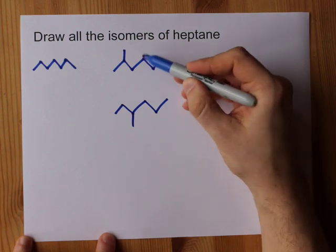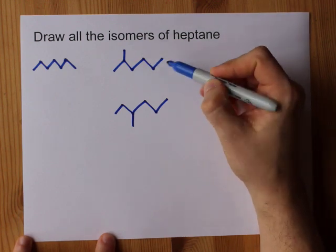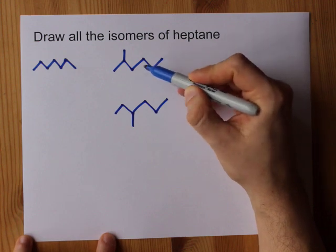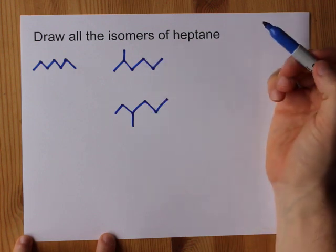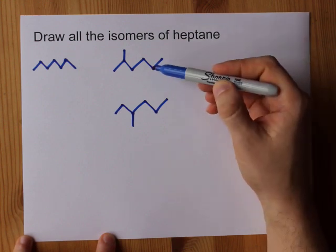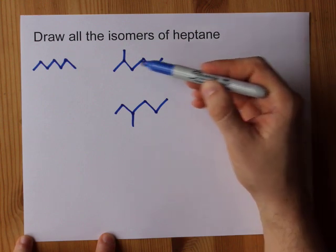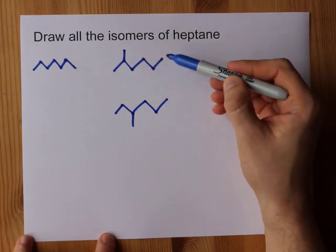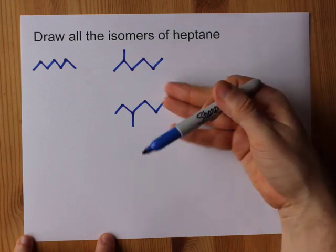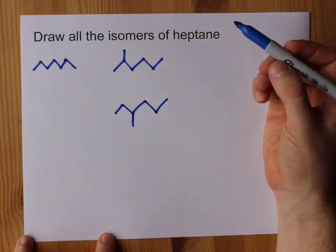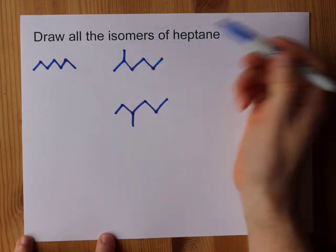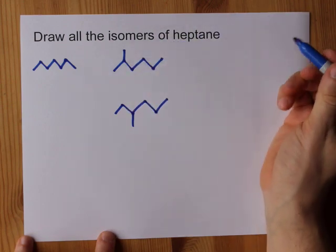If I did it here on carbon 4, then counting from the right-hand side — 1, 2, 3 — I'd have the same thing as carbon 3, by symmetry. And if I did it on this carbon, it would be the same as this molecule because counting from this end it's carbon 2 again because of symmetry. Just two hexane isomers here for this heptane molecule.